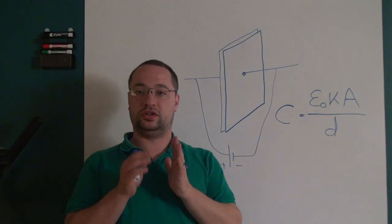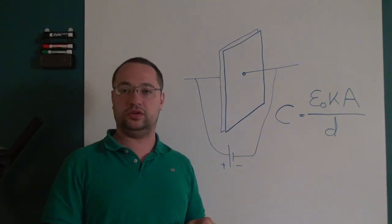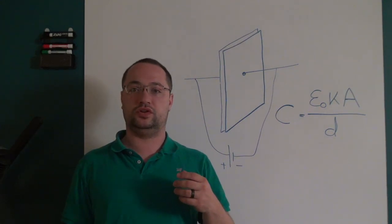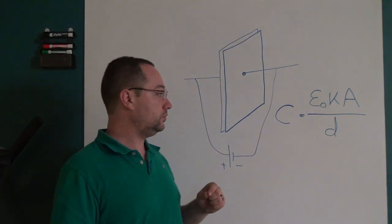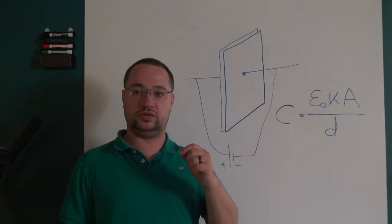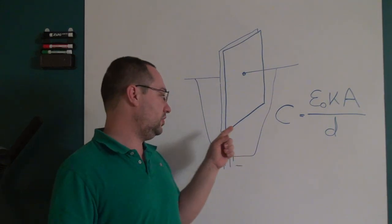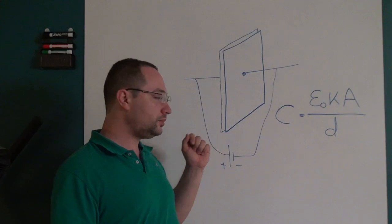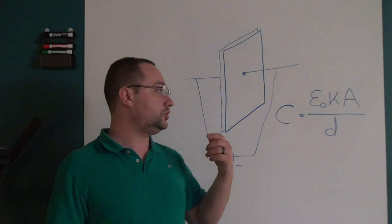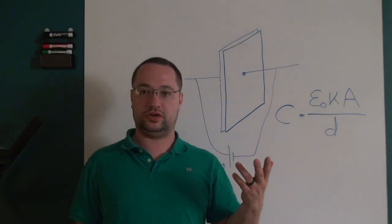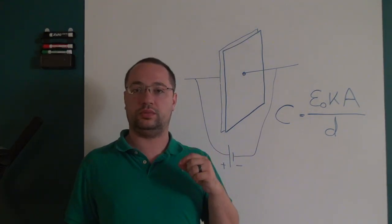Same thing with d, there's a limit to how close you can get the plates together and that limit usually refers to either the dielectric that's between the plates because what you'll get is if you get the plates too close together you can have an arc that jumps across it, or what you run into is just manufacturing issues because making something that thin is problematic.